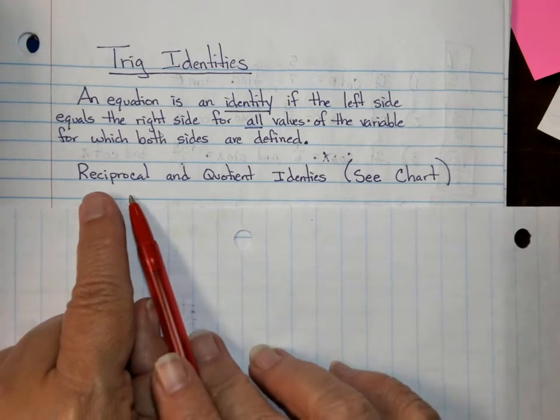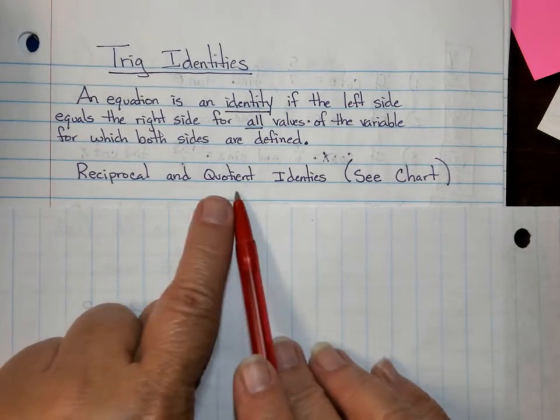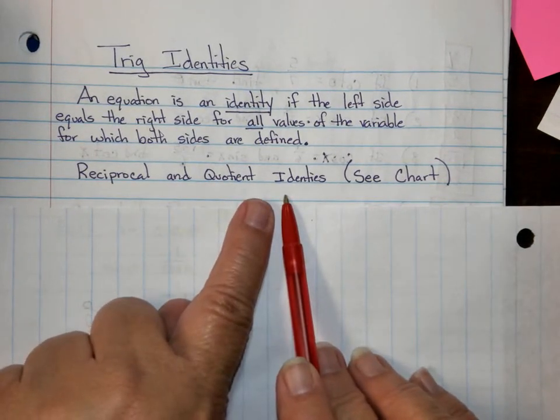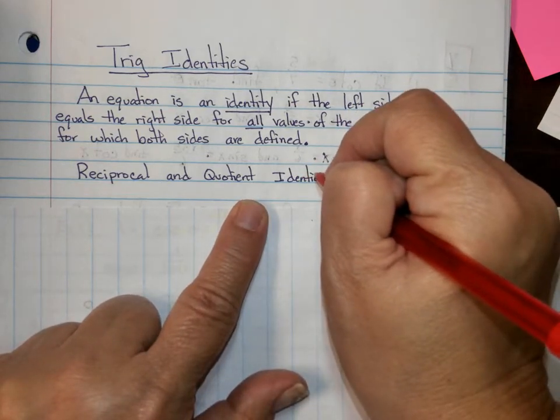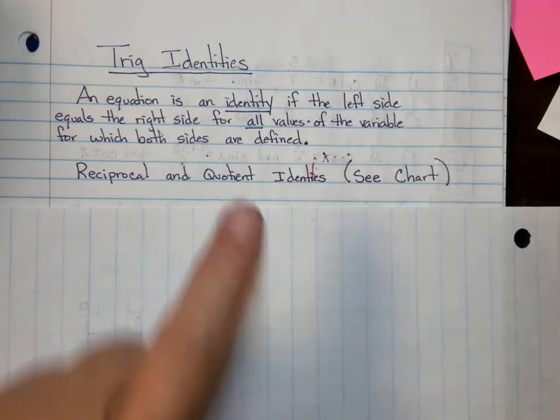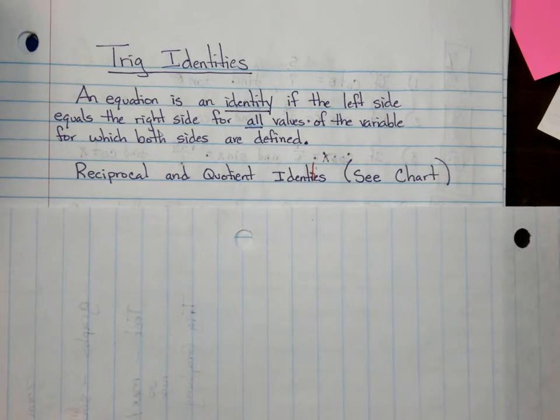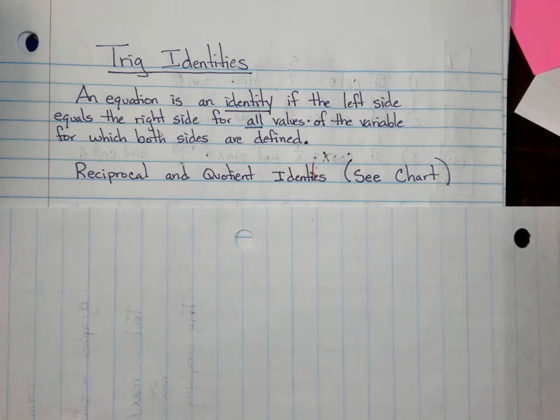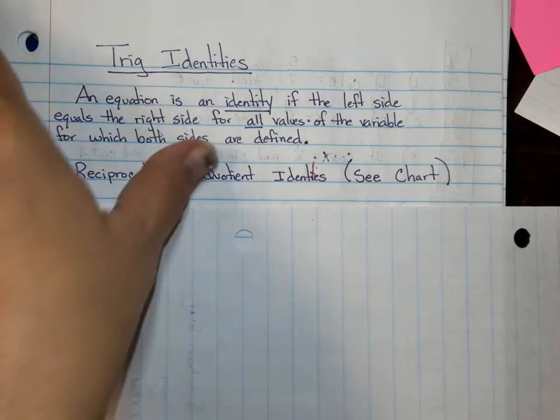Okay, so today we're going to focus on the reciprocal and the quotient identities. And when it says see chart, I'm talking about the yellow formula chart. Okay, so we're not going to write down all these identities in our journal. They are all there on our chart. Okay, so let's do some examples together.